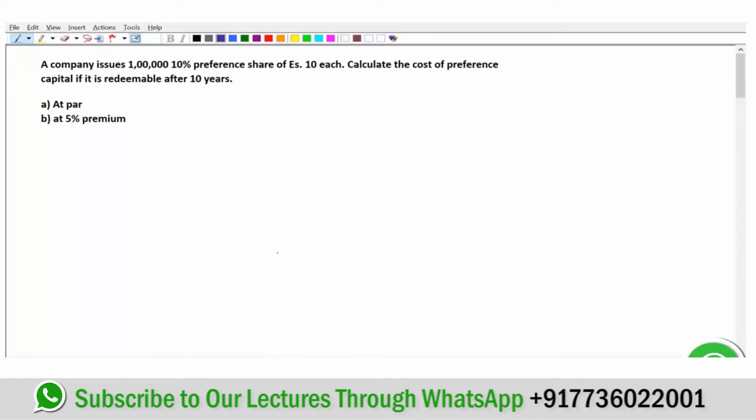Moving on to another practice problem. A company issues 1,00,000 10% preference shares of Rs. 10 each. Calculate the cost of preference capital if it is redeemable after 10 years at par or at 5% premium. What is